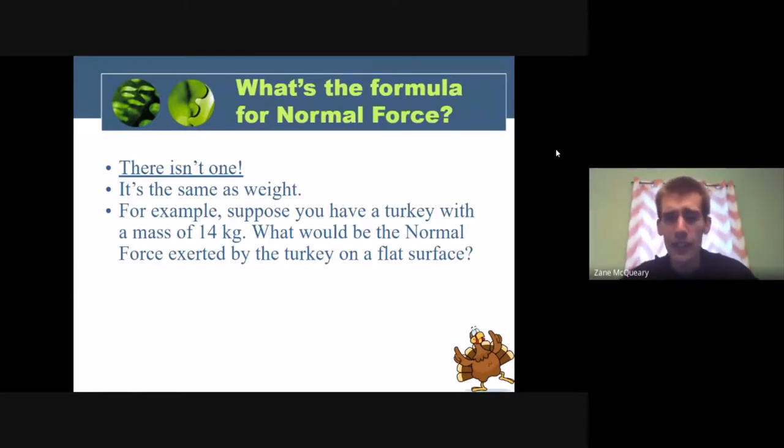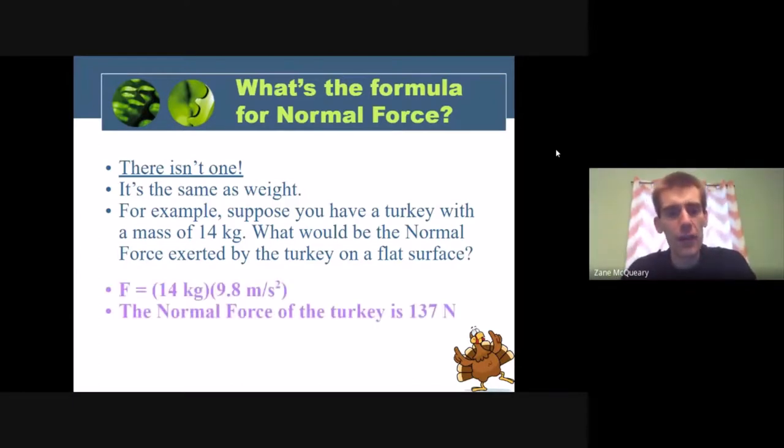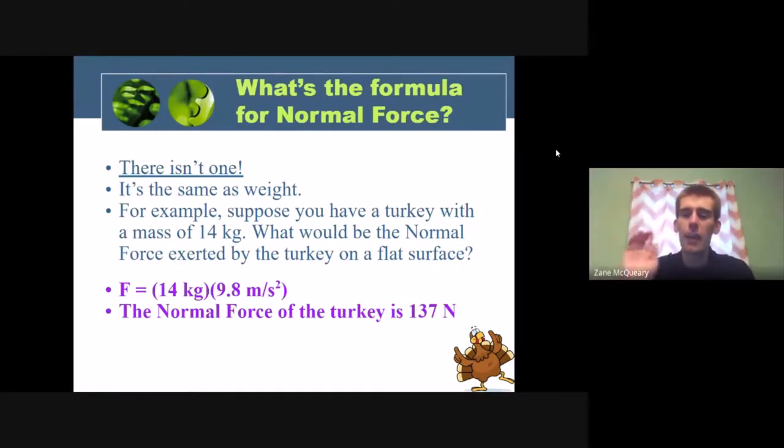So let's just say we have a 14-kilogram turkey here. And fun fact, that's actually doubled in the last 50 years or so. Turkeys used to be a lot smaller and we've bred them to be bigger and bigger so we can eat more and more on Thanksgiving. We want to figure out what is the normal force exerted by the flat surface on the turkey. So it should say the surface on the turkey, but we know that they're going to be equal and opposite. So it will be the same magnitude, right? We have the mass of 14, we know acceleration is 9.8. So the normal force of the turkey is going to be 137 newtons. So that would be the surface on the turkey pushing up on it 137 newtons. It will also be the same as the weight, correct? Just a different direction.